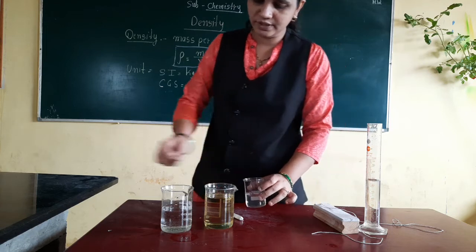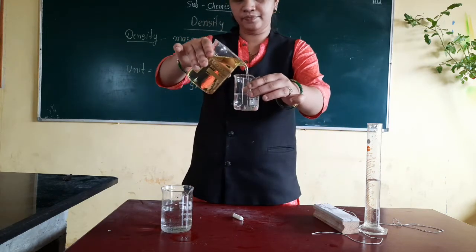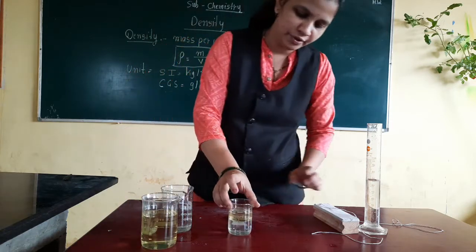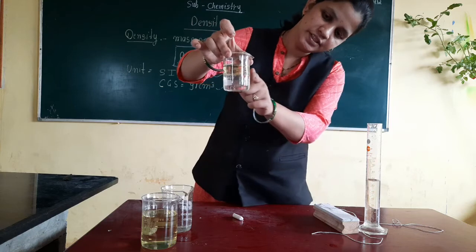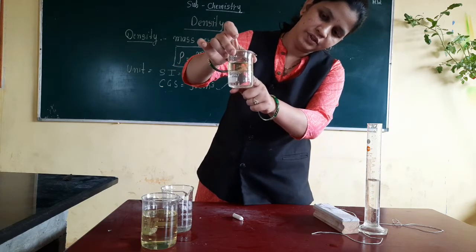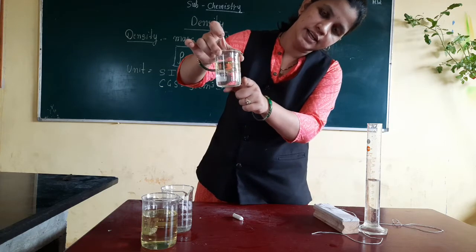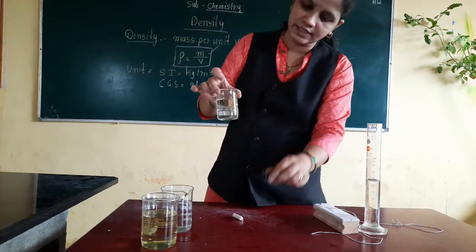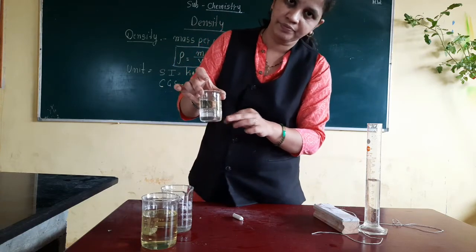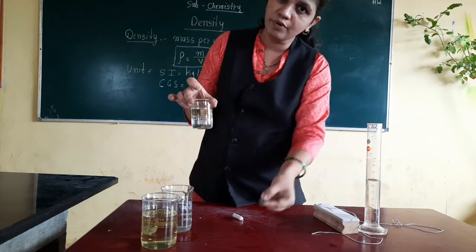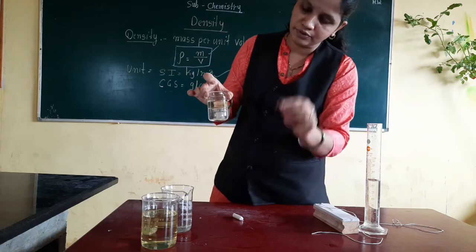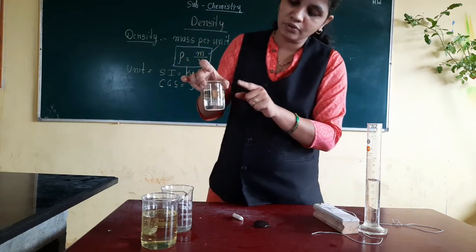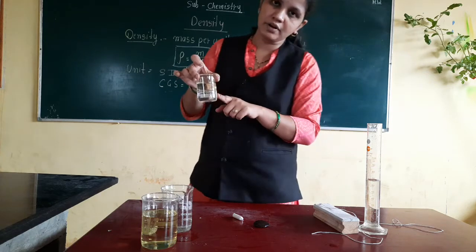Now we will see oil. Are you able to see the two layers? The first layer is oil and the second layer is water. Oil is less dense than water, so oil floats on water. But this stone is more dense than water, so it sinks. In this case, water density is more than oil, so oil is floating on water.